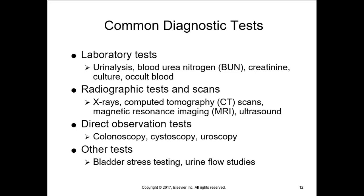We can also check for occult blood — occult means hidden. There may be hidden blood in the urine or hidden blood in the stool. Sometimes we can visibly see bloody or pink-tinged urine, but other times the urinalysis reveals red blood cells that aren't visible. For stool, we can get a stool sample — nurses obtain a sample from the middle of the stool and send it to the lab to check for blood, which may also appear as dark tarry stool.